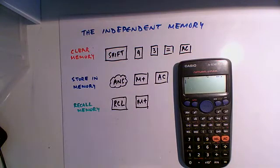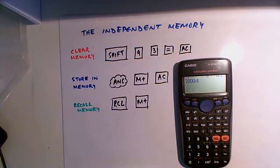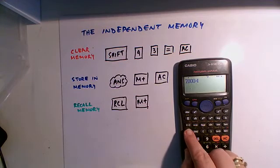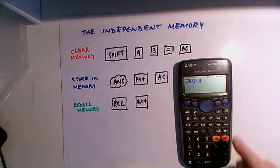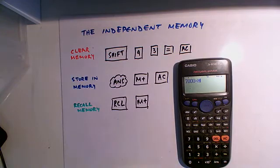So now let's say I want to recall that memory, and I want to multiply it by 7,000. So I can put in my 7,000, multiply, and then I can hit the recall button and the memory button, and it tells me that what's in the memory there is being multiplied by 7,000, and that gives me the answer.